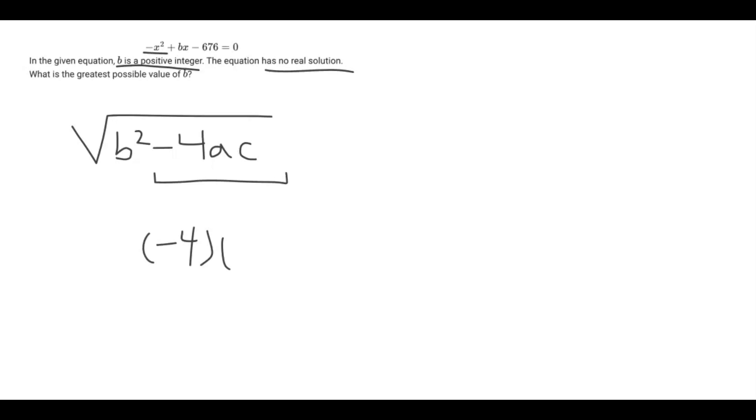Let's first calculate negative 4 times A. We know our A value is negative 1, times C. Our C value is negative 676. This will give us a value of negative 2,704.